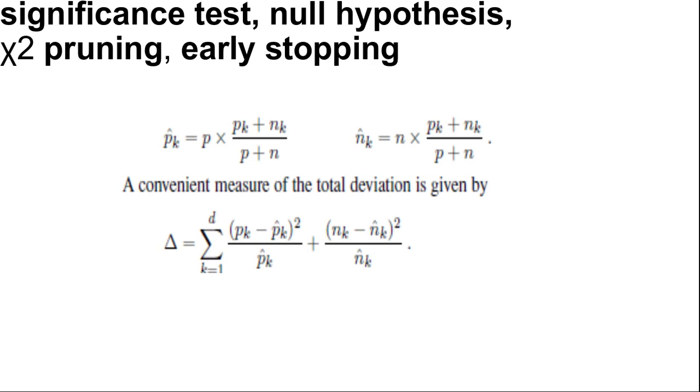Here is an example: consider the restaurant Type attribute with 4 values and thus 3 degrees of freedom. A value of delta equal to 7.82 or more would reject the null hypothesis at the 5 percent level. The decision tree learning algorithm can implement this form of pruning, which is known as chi-square pruning.